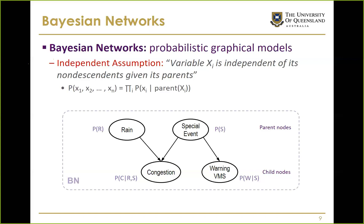A very important assumption in Bayesian networks is the conditional independence assumption, where a variable X is independent of its non-descendants given its parents. This means the joint probability over a set of variables can be factored into the product of pairwise parent-node pairs, allowing us to represent complex joint probability as a simple product.